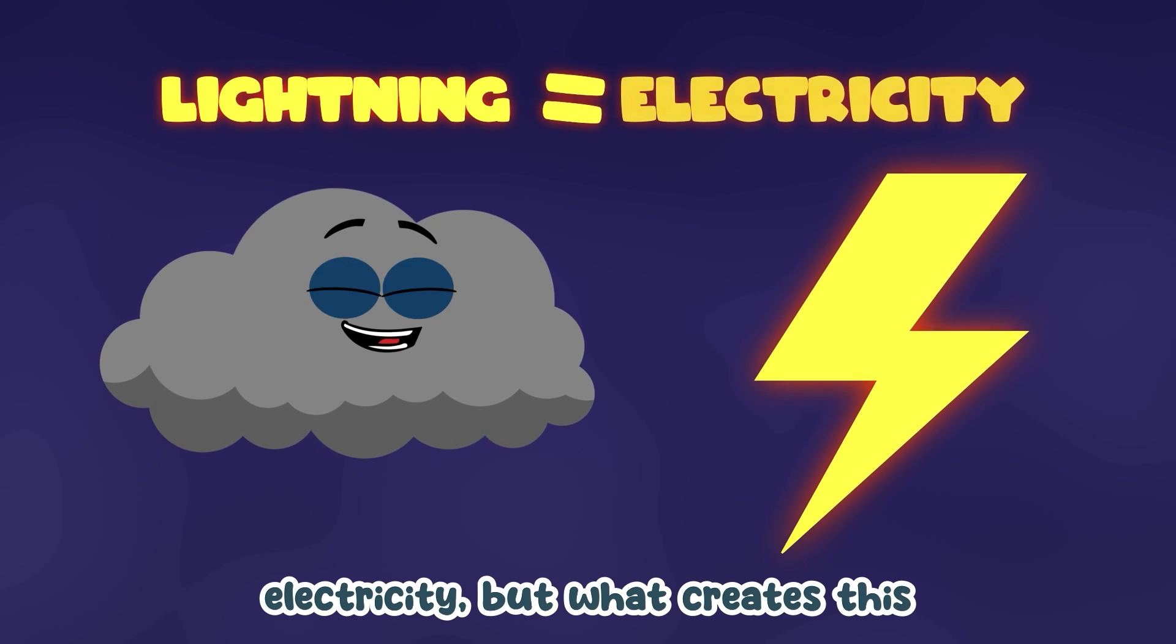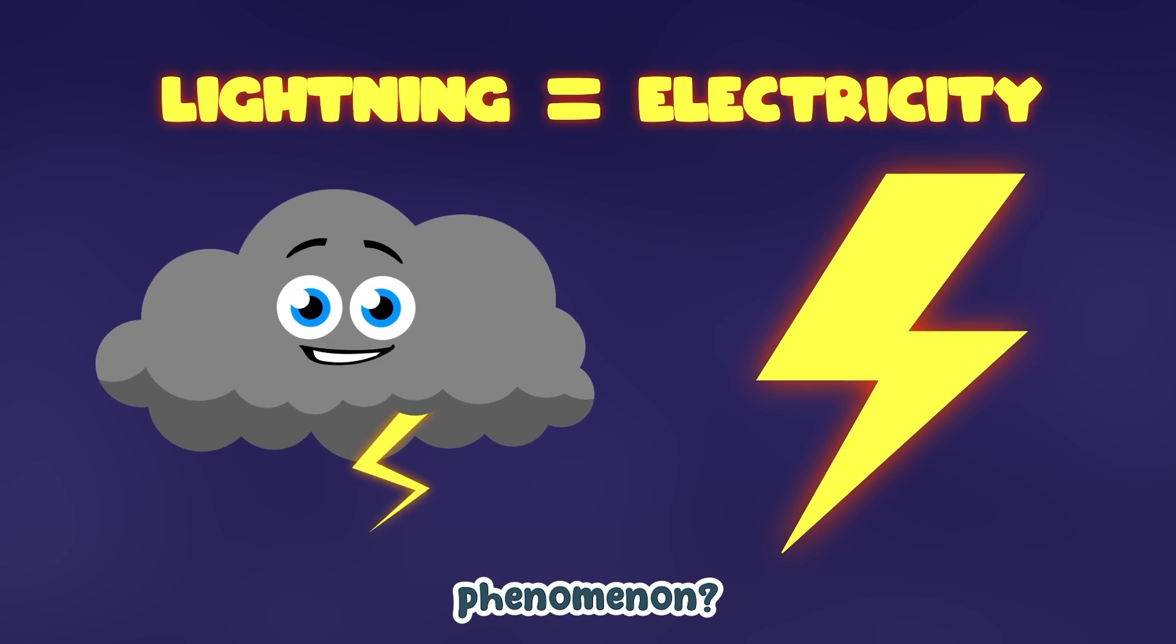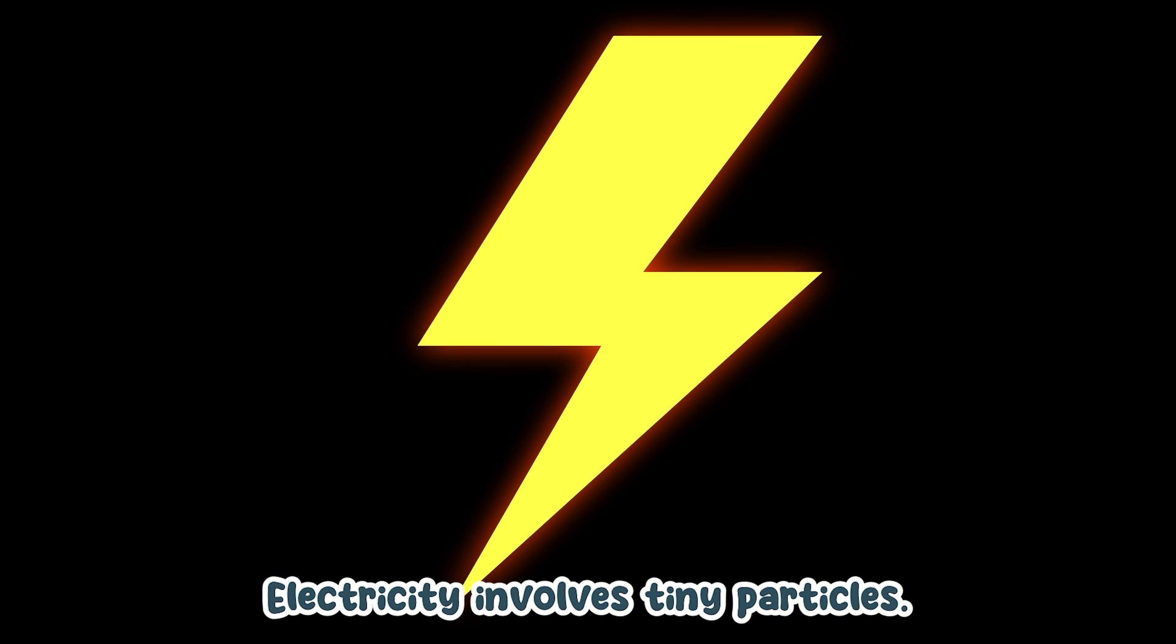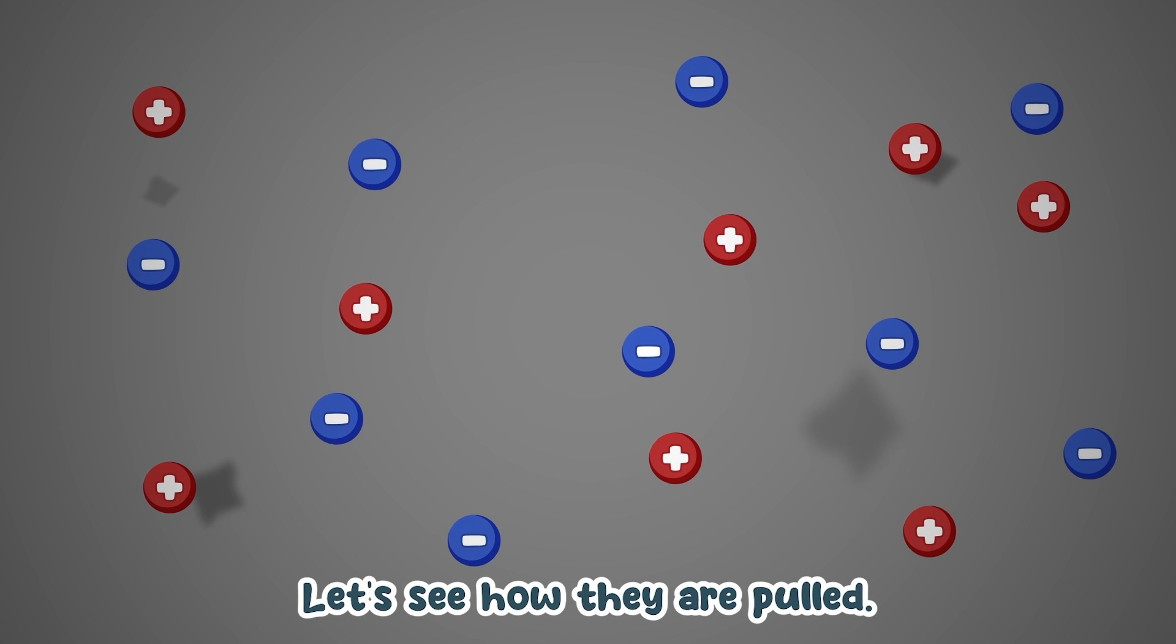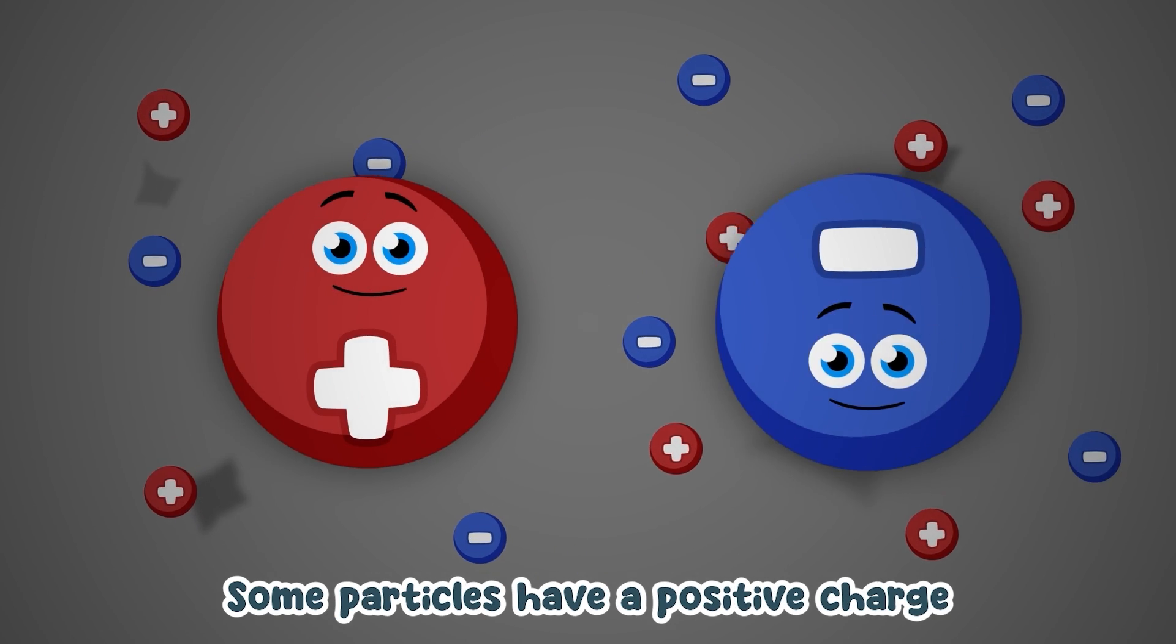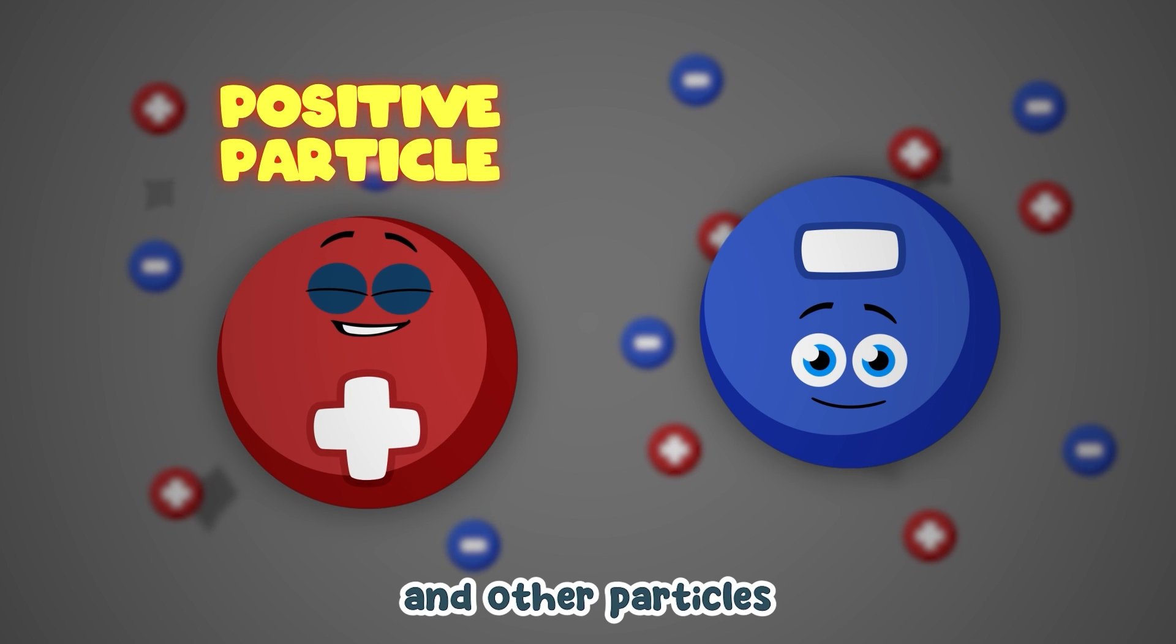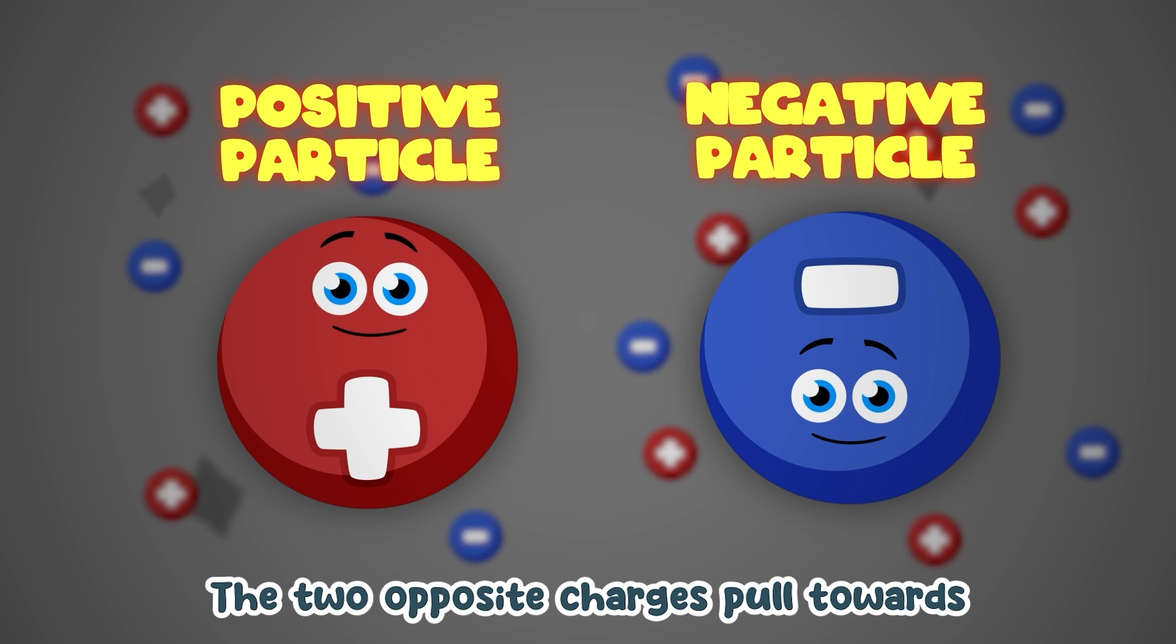Well, it's electricity. But what creates this phenomenon? Let's learn and see. Electricity involves tiny particles. These are found in storm clouds. Some particles have a positive charge and other particles have a negative charge. The two opposite charges pull towards one another.